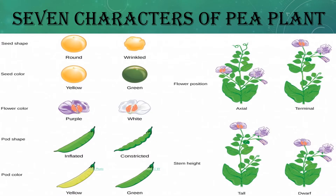He selected seven pairs of characters in the pea plant. Later we will study why he selected the pea plant and not any other plant. So he selected seven pairs — that means 14 characters in total.